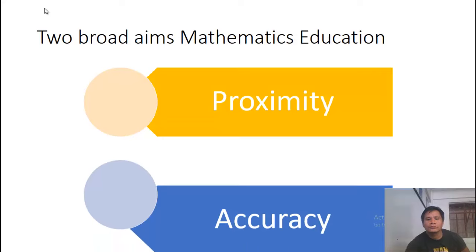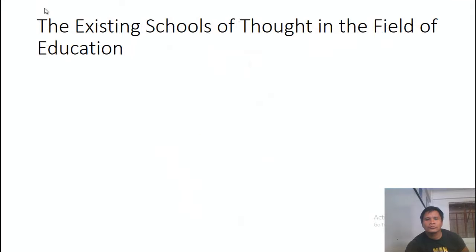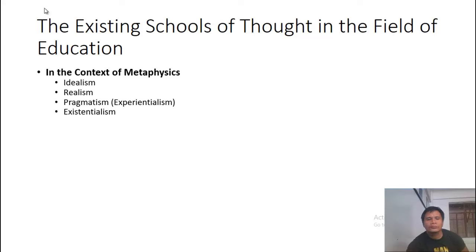Let us take a look at the philosophy of education, the type defining the philosophy of mathematics education. The existing schools of thought in the field of education, in the context of metaphysics: idealism, realism, pragmatism, experientialism, existentialism.